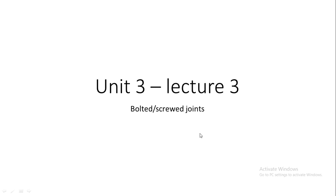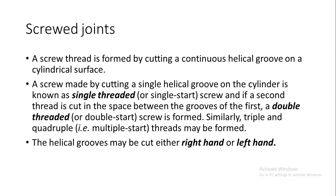Let us see the different types of bolted or screwed joints which are used to connect two components — either plates or shafts together. A screwed joint or screwed thread is formed by cutting a continuous helical groove on a cylindrical surface, which is called a screw. A screw can be single-threaded, double-threaded, or multiple-threaded, and it can either be left-hand or right-hand. A double thread is when the second thread is cut in the space between the grooves of the first thread.